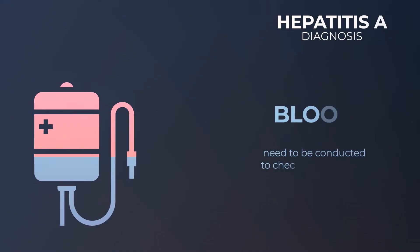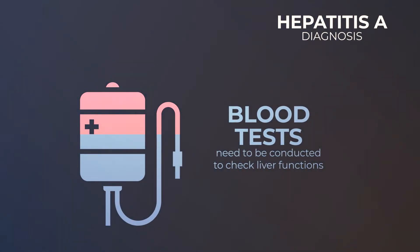The doctor will run some tests, which unfortunately includes blood tests. A lot of children don't like blood tests, but in this condition blood tests have to be done to confirm the diagnosis. These are called liver function tests. After these are done, the doctor will confirm the diagnosis of hepatitis and identify that it is specifically a hepatitis A virus disease.